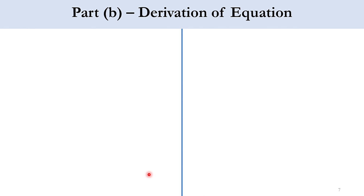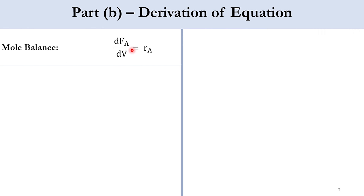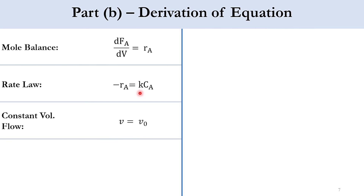For task two, we start with the PFR mole balance: dFA/dV = rA. From the rate law (first order): −rA = k·CA. Since the volumetric flow rate is constant, V = V0, we use FA = CA·V = CA·V0. Substituting FA into the mole balance, we get V0·(dCA/dV) = rA.